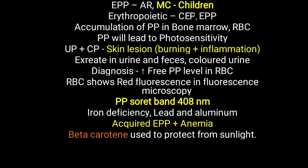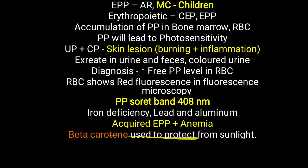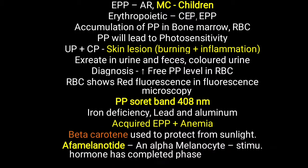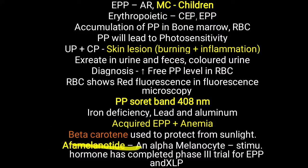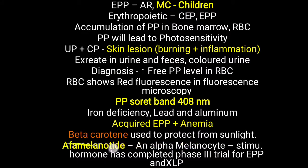Beta carotene can be used to protect from sunlight or decrease photosensitivity, as it works as a protective factor. Importantly, alpha-melanocyte stimulating hormone has completed phase 3 trials for the treatment of erythropoietic protoporphyria as well as X-linked porphyria. X-linked porphyria is particularly related to ALA synthase type 2, which is found in the erythropoietic variety. This treatment may be available in the future for erythropoietic protoporphyria.